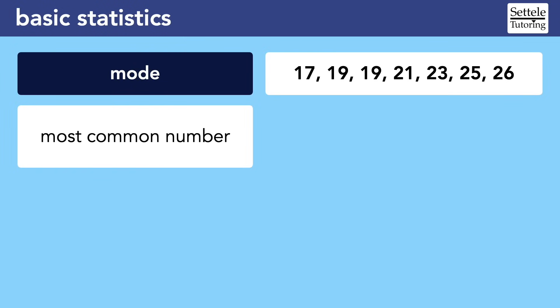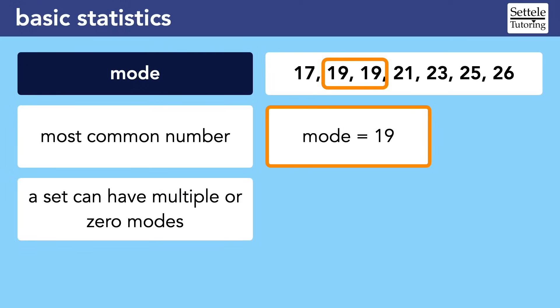Mode is extremely easy to explain and to find. The mode is the most common number. You can remember that easily because the words mode and most both start with the letters MO. In our example, the mode is 19 because there are two 19s and only one of every other value. It's worth noting that a set can have multiple modes, or it can have zero modes. Honestly, the SAT does not ask about the mode very often, but you should still memorize it just in case, and so that you don't confuse it with mean and median.